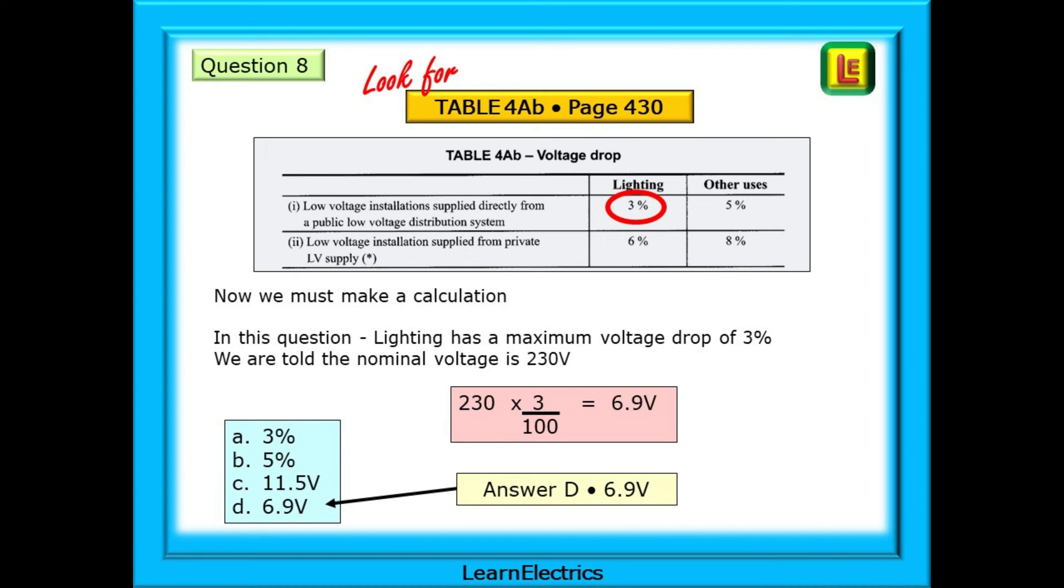Using the data from the question, we can easily find the maximum voltage drop for a lighting circuit supplied from a public system. It is 3%. But the question wants it in volts, not percentages. So we must make a small calculation. To find the volts from the percentage, multiply 230 volts by 3 and then divide by 100 and out pops the answer 6.9 volts. Answer D. Notice that the possible answers also include the percentages just to see if you are paying attention to the question. Very sneaky. Don't be caught out by it.